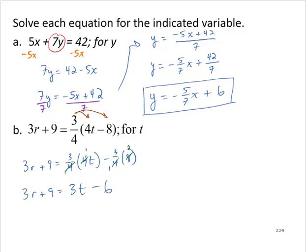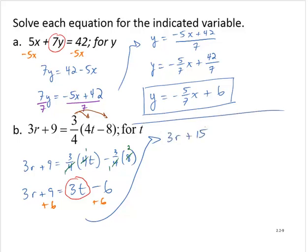Now we can clearly identify the variable term we wish to isolate. And I will add 6 to both sides yielding 3r plus 15 is equal to 3t.